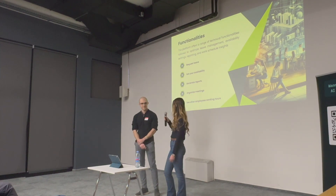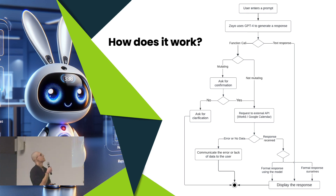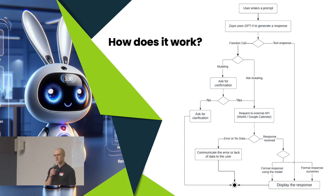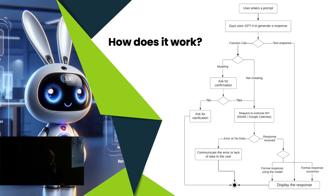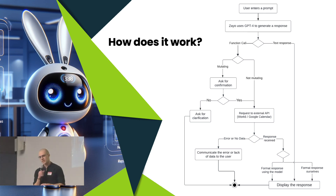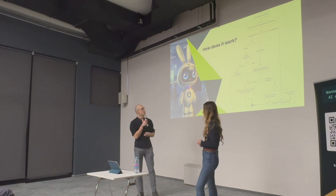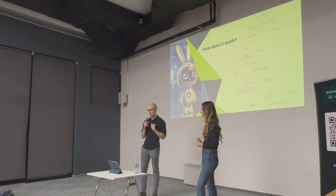Here's an overview of the whole process. We start when a user enters a prompt. XIO uses it to generate a response. The response can be a text response, in which case we directly interact with the user. The other case is a function call. A function call can be mutating — meaning it changes the user data in some way — in which case we always display a confirmation prompt. If the user decides to cancel, we ask for further clarification and the whole process starts over again. In cases where the user accepts the suggested changes or the function is not mutating, we send a request to an external API, which in most cases is our platform, Work6.